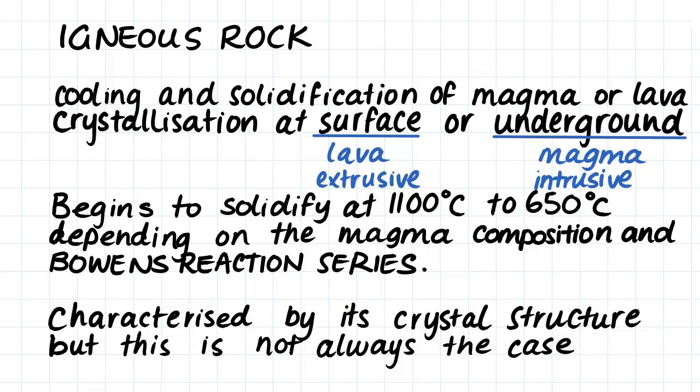If you're not sure about Bowen's reaction series or the different magma compositions that exist, I would suggest you go and watch the last two videos of the previous section. In those videos we had a look at how magma forms and the different types of magma. This is quite important in order to understand igneous rocks because this is what igneous rocks form from.